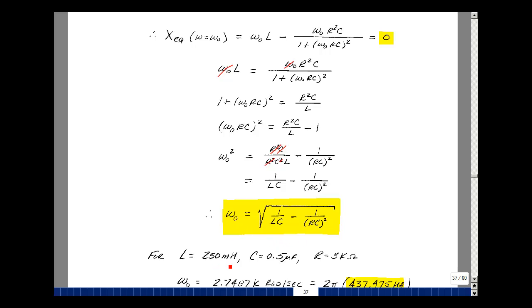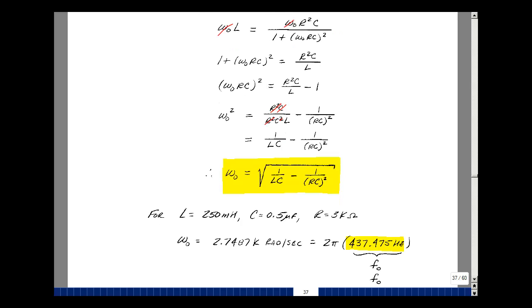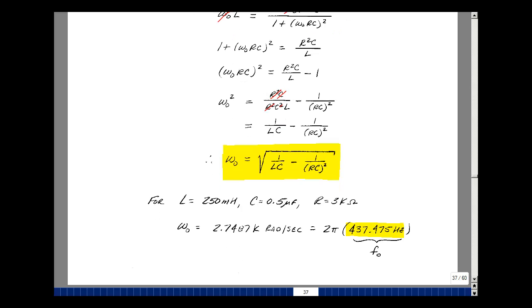So if we had a 250 millihenry inductor, a 0.5 microfarad capacitor, and a 3k resistor, we could calculate the value of ω₀. We tend to work in hertz in labs, so let's divide by 2π, or pull a 2π out of here, and I get 437.475 hertz. That is the resonant frequency.